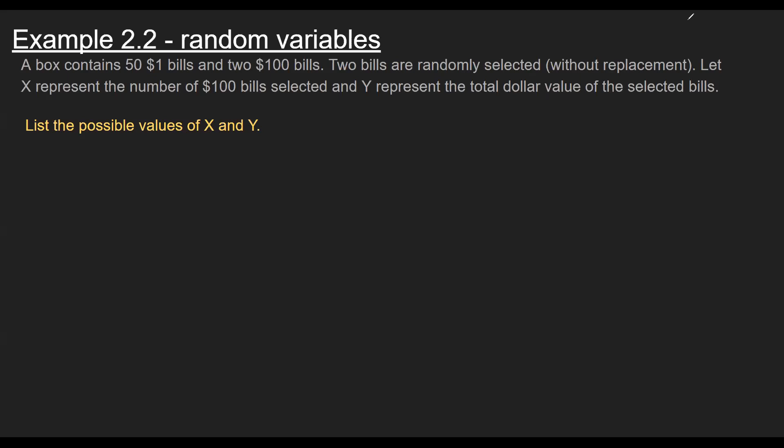But just for clarification here, we're going to remove two bills, and we're not going to replace them. Now, the idea for the first part here is let's just explore what a random variable is, how to represent it. So we're given two random variables. One here, the X, I'm going to highlight in blue, is going to represent number of $100 bills selected. And then Y, let's pick a different color green, is going to be the total dollar value of the removed bills. And all you're asked to do here is what are the possible values? So keep in mind again that a random variable is just the numerical value of a random experiment. The random experiment meaning I don't know what's going to happen, but I can try to quantify it numerically.